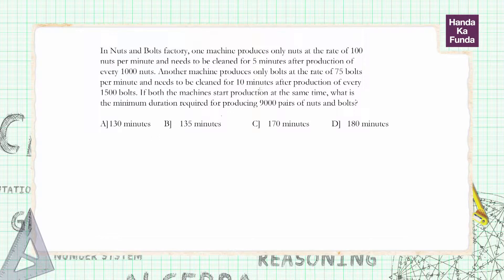Hi, in this particular question we are talking about a factory which produces nuts and bolts. The rate of production of nuts is 100 nuts per minute, but they need to be cleaned for 5 minutes after the production of 1000 nuts. So let's consider one batch is of 1000 nuts.